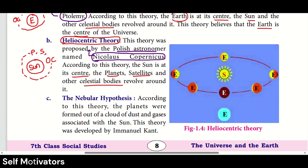The next theory is the Nebular hypothesis. According to this theory, the planets were formed out of a cloud of dust and gases associated with the sun.